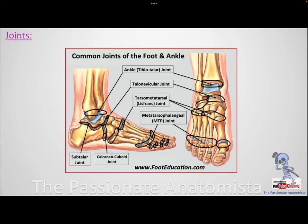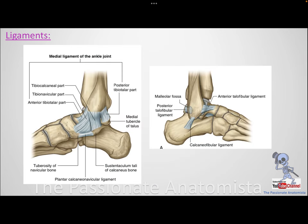Now for the ligaments. Laterally, you have the fibula above and the calcaneus and talus below. Talus and calcaneus are the big bosses of the tarsals. The lateral ligaments connect the lateral bones to the important structures around them. These are: calcaneofibular, anterior talofibular, and posterior talofibular — because talus is so important it makes both anterior and posterior connections with the fibula.